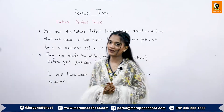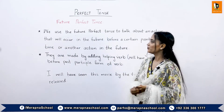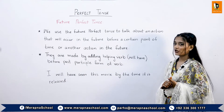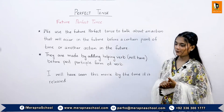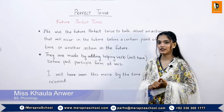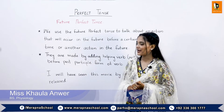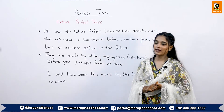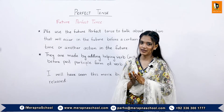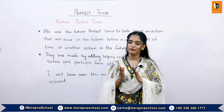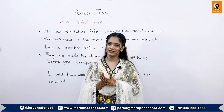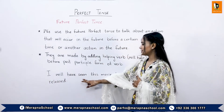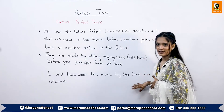Now we will move on to the next topic, which is the future perfect tense. We use the future perfect tense to talk about an action that will occur in the future before a certain point of time or another action in the future. They are made by adding the helping verb will have before the past participle form of the verb. The formation of the sentences is the same as the present and past perfect tenses, only the helping verb is changed to will have. For example: I will have seen this movie by the time it is released.